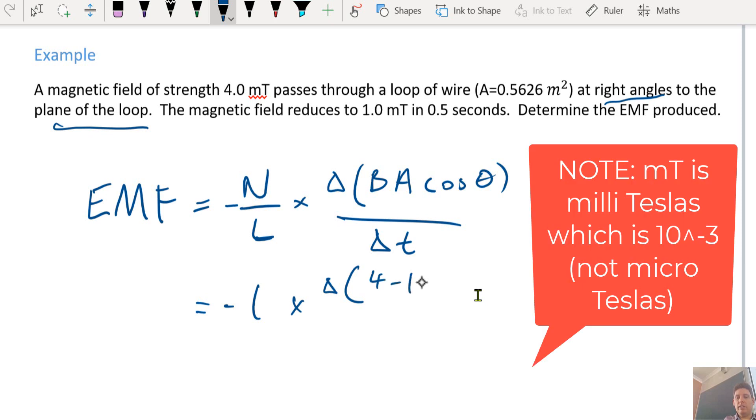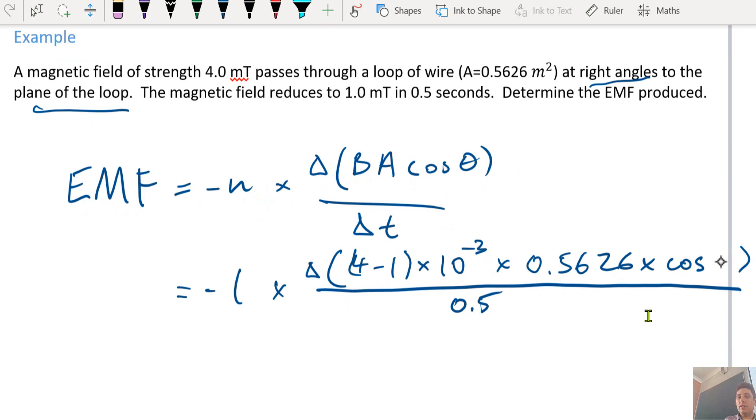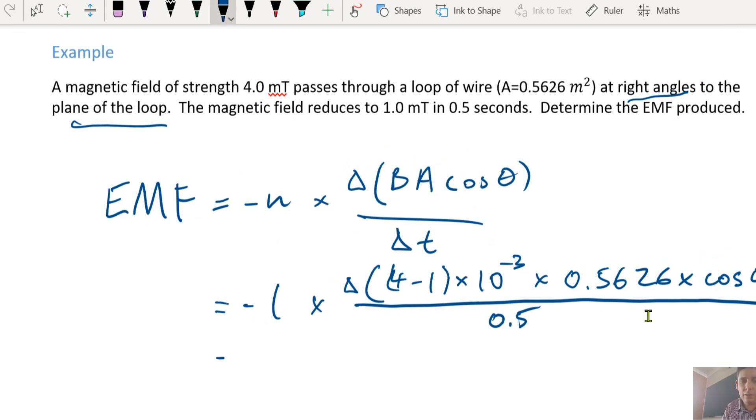4 minus 1 microteslas times by, what's micro? Negative 6. Times 10 to the negative 3 times A times cos. It's cos 0. 0.00337 volts.